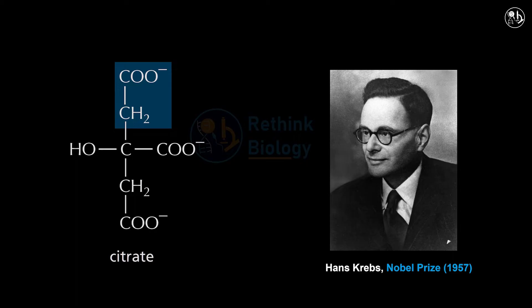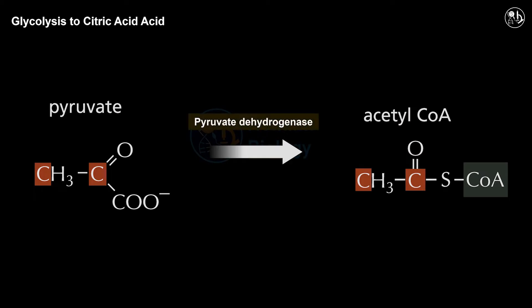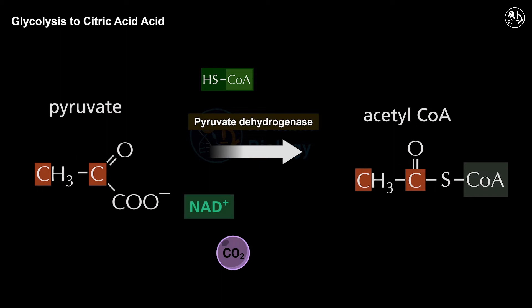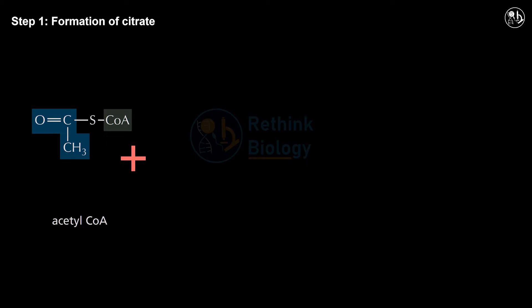The citric acid cycle was discovered by Sir Hans Adolf Krebs, who received the Nobel Prize for his work in 1957. Before entering the TCA cycle, pyruvate — the product of glycolysis — is converted into acetyl-CoA by the enzyme pyruvate dehydrogenase, which removes a carbon dioxide and adds a coenzyme A.